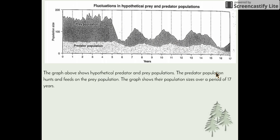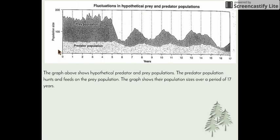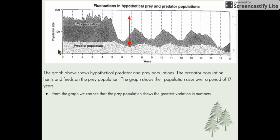This graph shows a predator-prey interaction with years along the x-axis and population size along the y-axis. It shows a hypothetical predator-prey population relationship over a period of 17 years. From the graph, we can see that the prey population shows the greatest variation in numbers — it started at around 200, then dropped considerably to just above 50, and then shows a constant fluctuation much greater than that of the predator population.